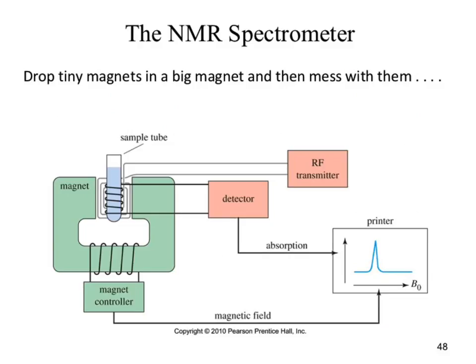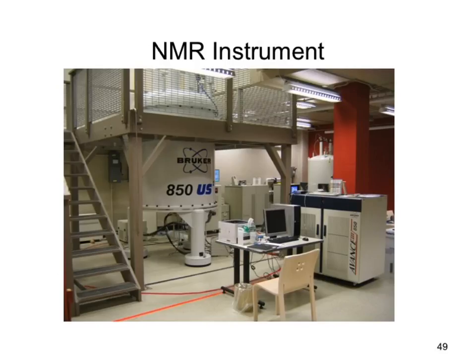Your spectrometer is a giant magnet: put the sample in, there's a little controller and a detector. This is a big one — 850 megahertz. You need stairs to get up to where you put the sample in. Really, really big.